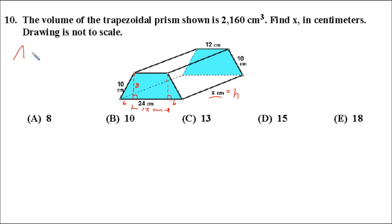Okay, let's not forget area for trapezoids. It's 1 half, the sum of the two bases, base 1 plus base 2, times the height of the trapezoid. Now I'm not talking about this height over here in red. This is the height of the trapezoidal prism. And that deals directly with the volume. This is actually the height of the trapezoid itself.